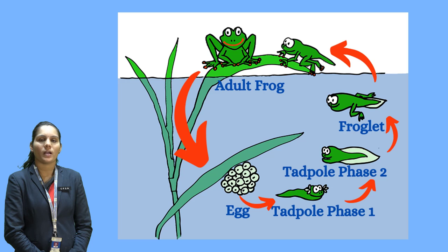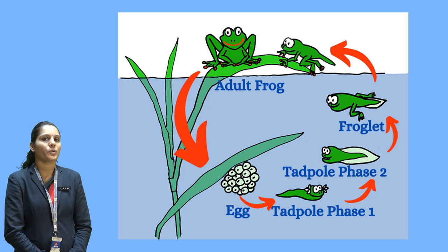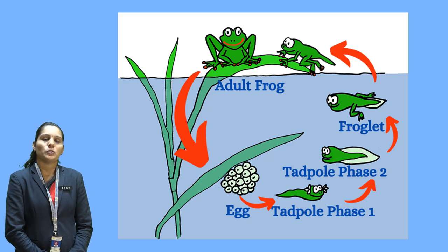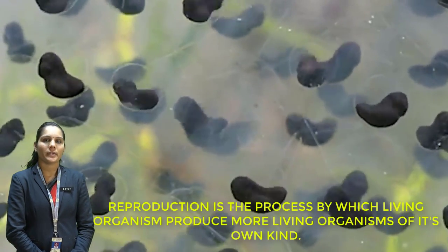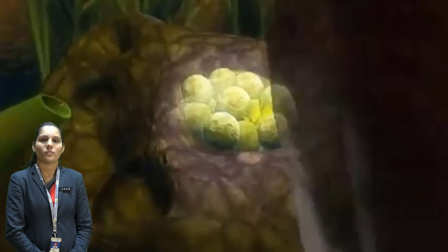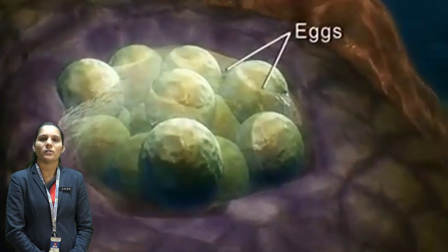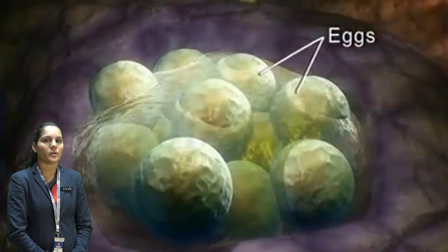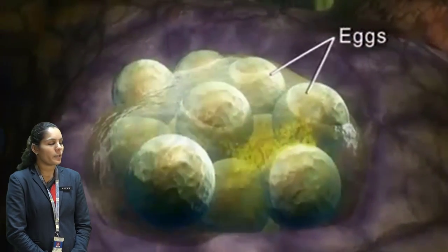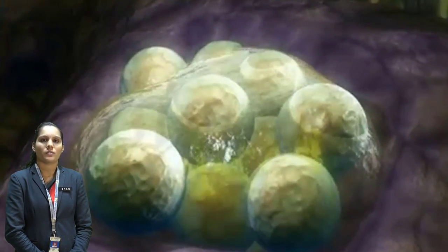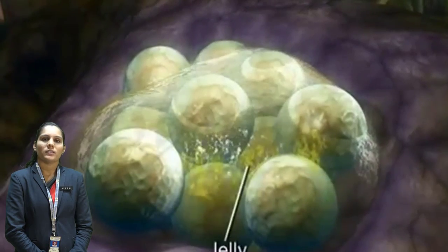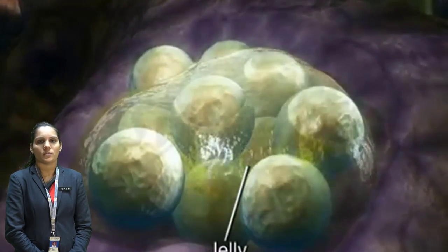In that topic, we have already learned about the life cycle of a frog. So before that, I would like to tell you some important terms related to the life cycle of the frog. Let's learn about reproduction first. Reproduction is the process by which animals give birth to their young, by the sexual process and the asexual process.